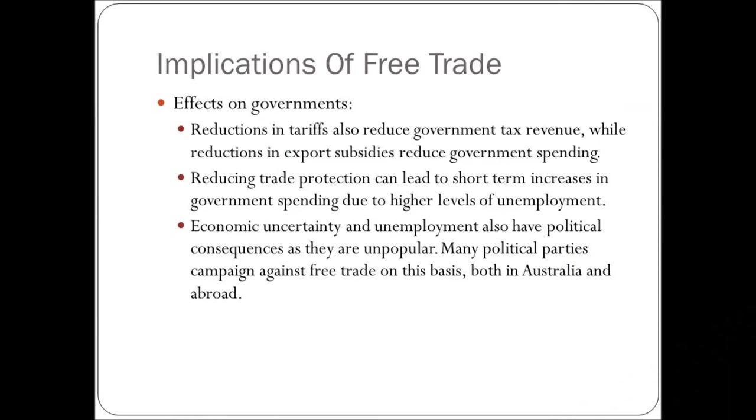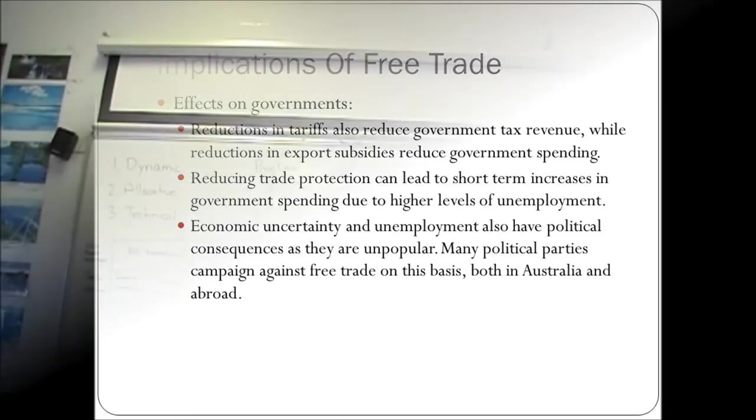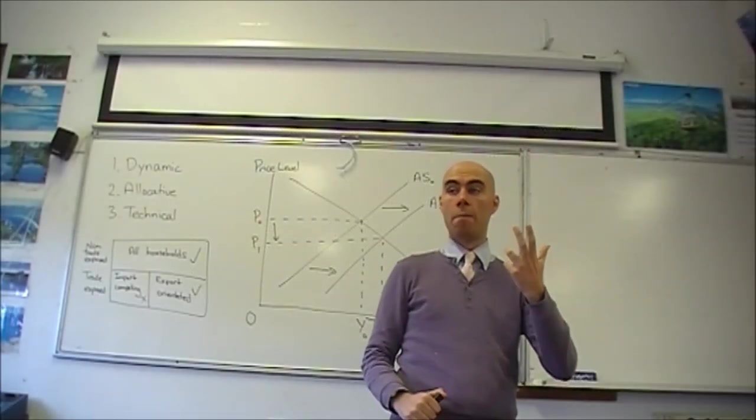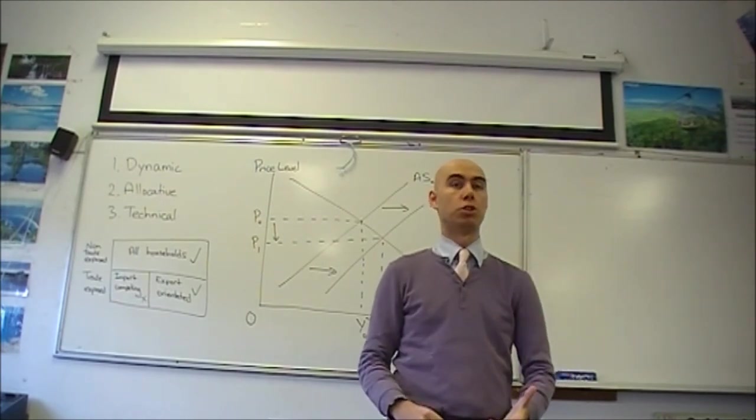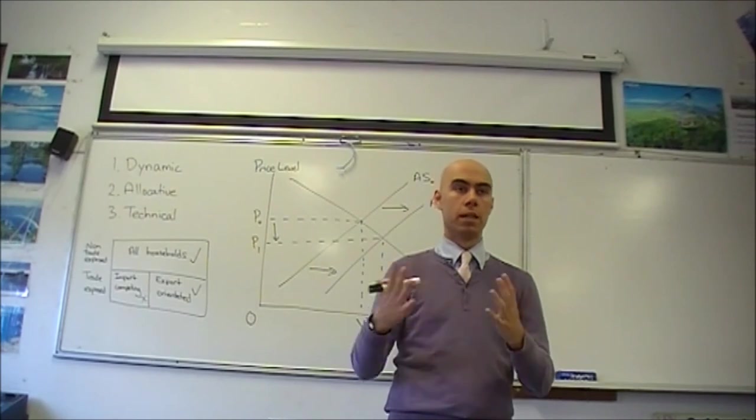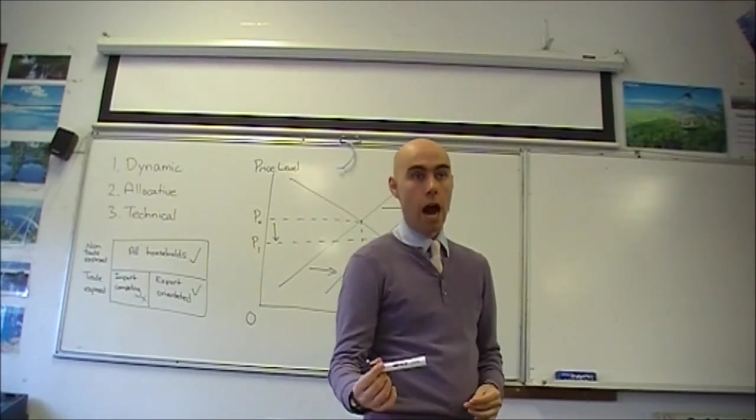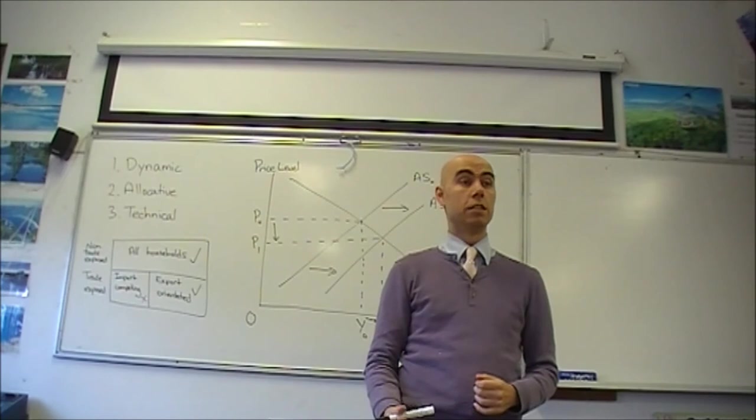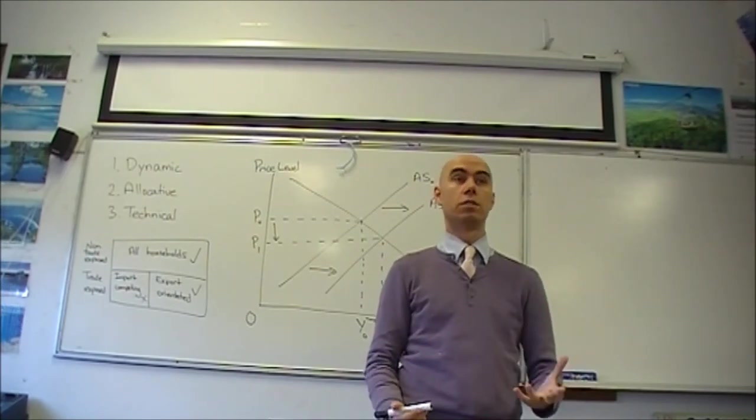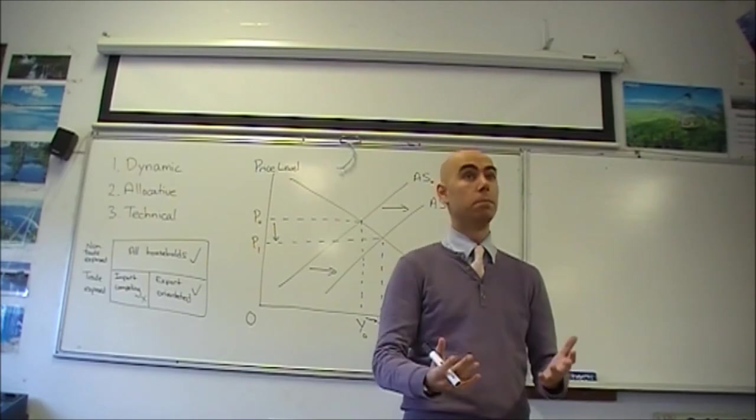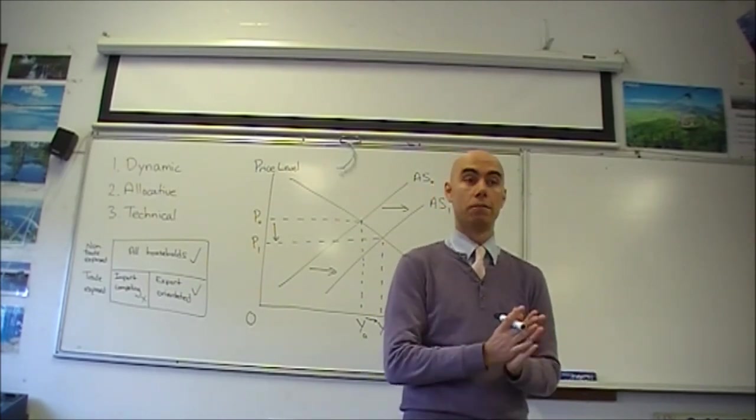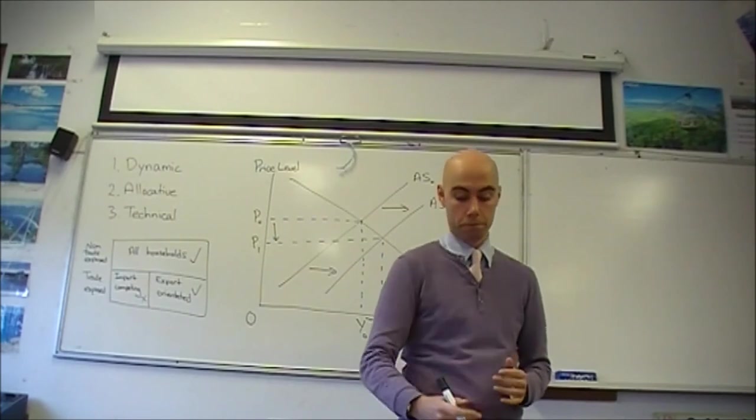Next point. The reduction in trade protection can lead to short-term increases in government spending due to higher levels of unemployment, higher welfare payments, also higher payments in terms of retraining and requiring government to pay for education or to relocate people to other places where there is employment. As you've seen, there are actual government incentives to have people relocate to regions which have a growing mining industry, for example, because people are unwilling to move from geographic areas with higher levels of unemployment, often as a result of free trade.